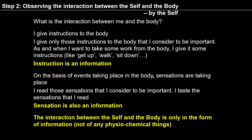In step 2, we are trying to observe how the interaction is taking place between me and the body. With observation, we can see that I give instruction to my body and the body follows it. I instruct the body to walk, body walks. I instruct body to sit, body sits. Whatever instruction I give, body follows it.